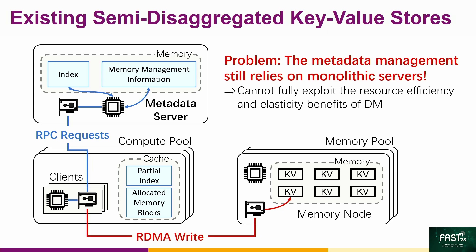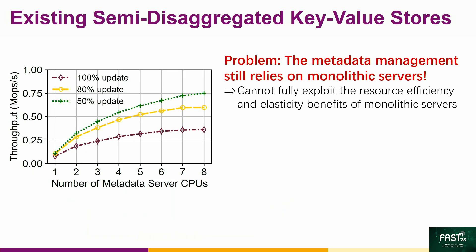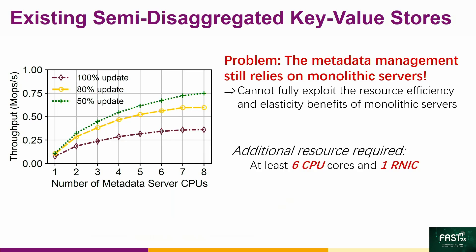However, such a semi-disaggregated design still cannot fully exploit the hardware benefits of the DM architecture, because the metadata management still relies on monolithic servers, and many resources still have to be allocated to this metadata server. In our experiments, we find that at least six additional CPU cores and one RDMA interface card have to be assigned to the metadata server until it is no longer the performance bottleneck.